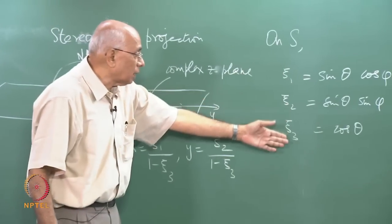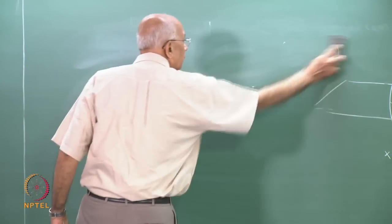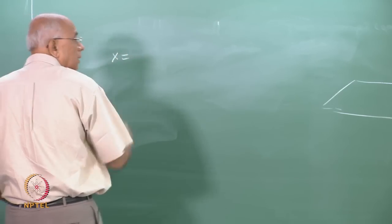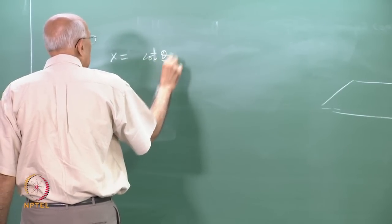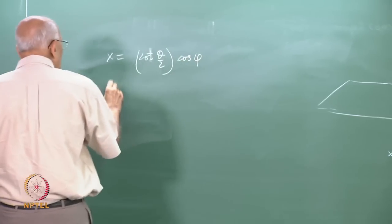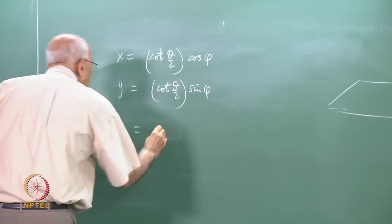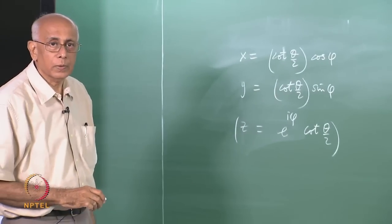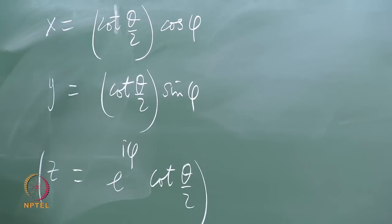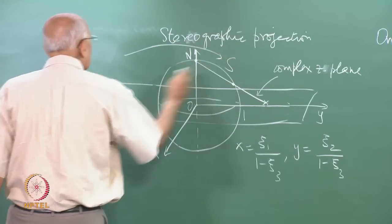Writing psi one as sin theta cos phi and (1 minus psi three) as (1 minus cos theta), and going to half angles, it becomes clear that x equals cot(theta/2) cos phi and y equals cot(theta/2) sin phi. Therefore z equals e^(i phi) cot(theta/2) and z star equals e^(-i phi) cot(theta/2), where theta and phi are the polar and azimuthal angles on the sphere. This sphere is called the Riemann sphere.